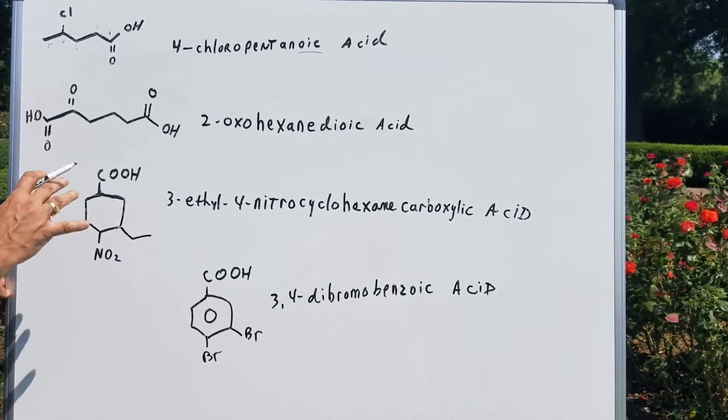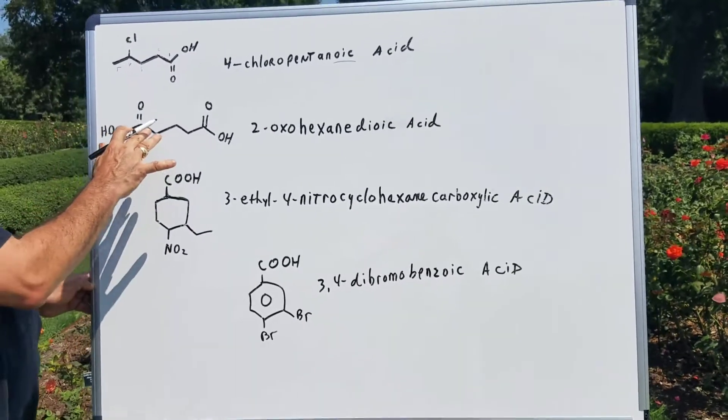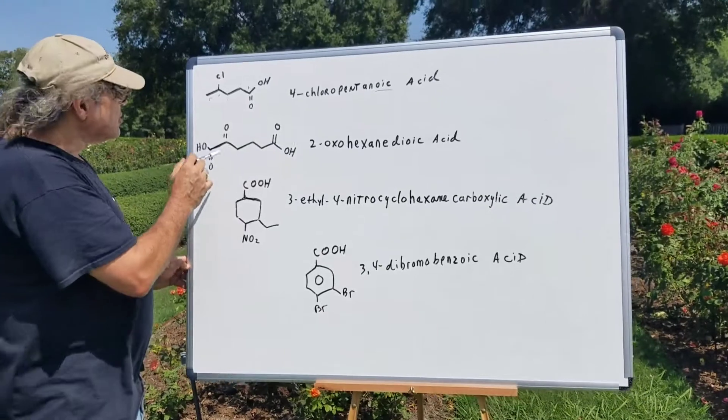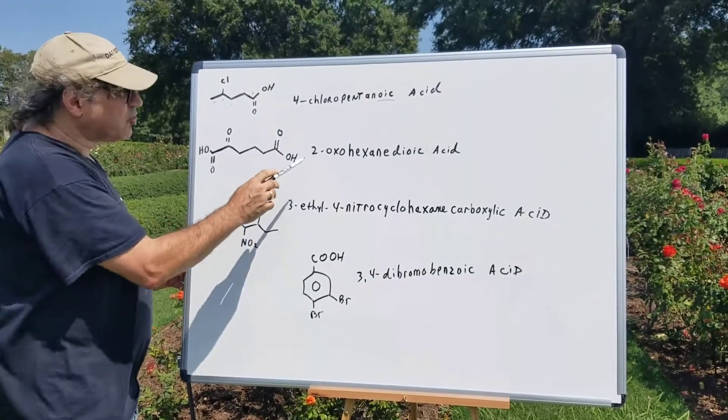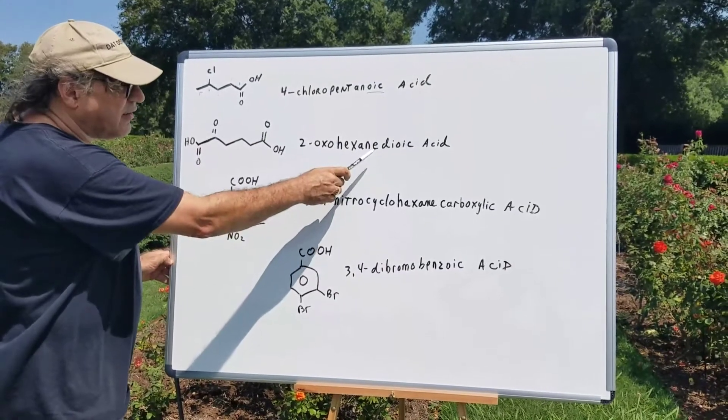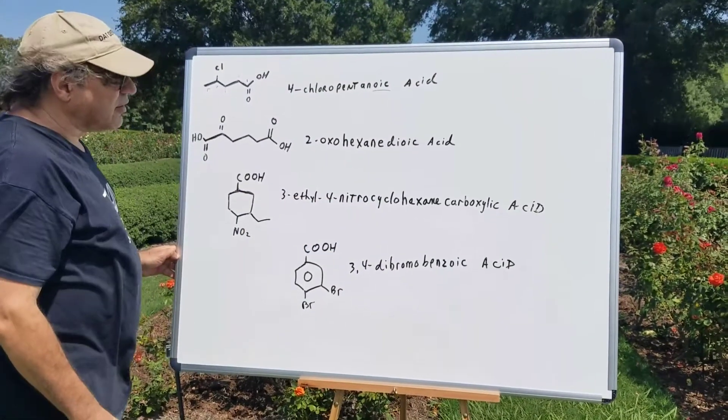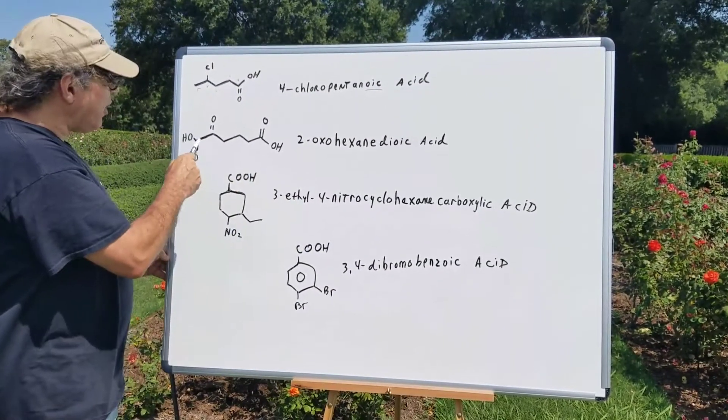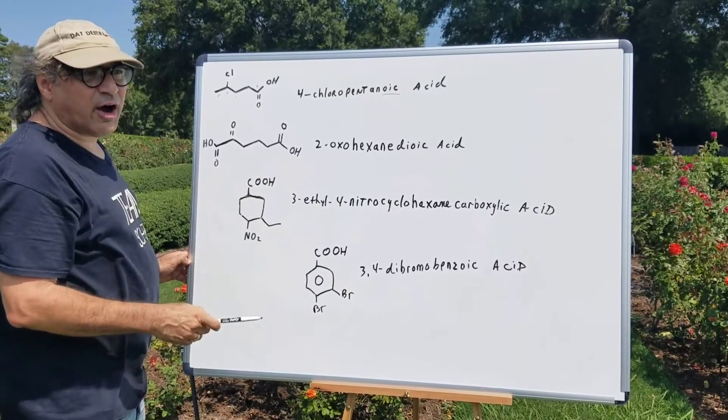Since it's a substituent, we're going to number it from left to right to give it the lowest number. So I would call this one 2-oxo-hexane dioic acid. 2-oxo-hexane dioic acid.